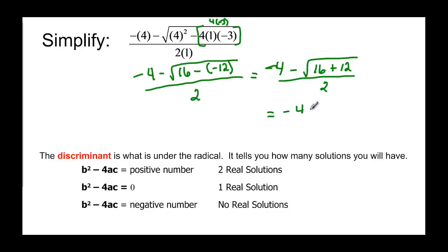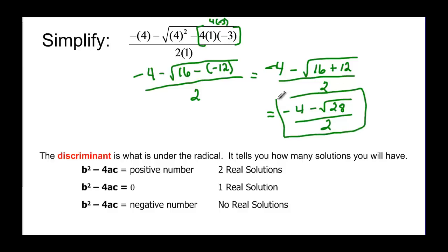So we have negative 4 minus the square root of 28, all over 2 — that would be as simple as we need to get it. What's underneath the radical, b squared minus 4ac, is called the discriminant. The discriminant is nice because it tells us what kinds of answers we're going to have. If it's a positive number like what we have here, you'll have two real solutions.